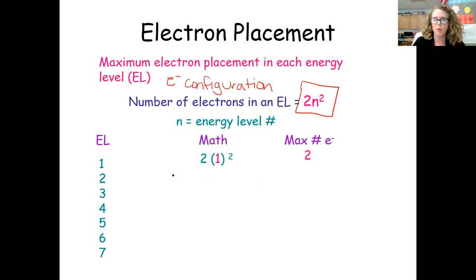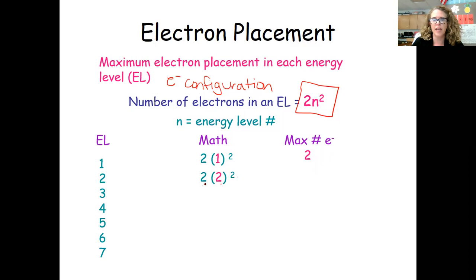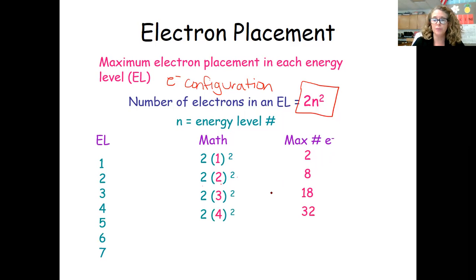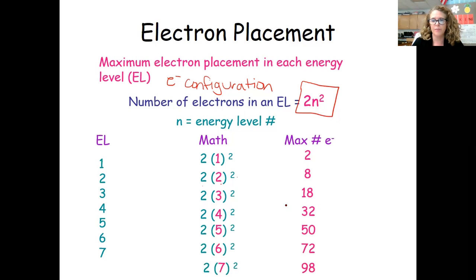Using the formula 2n²: for energy level one, 1² = 1 × 2 = 2, so the first level holds a maximum of two electrons. No element on the periodic table has a number larger than two as its first number in the electron configuration. For level two: 2² = 4 × 2 = 8. For level three: 18. For level four: 32. No element on the periodic table exceeds these values in their respective levels. Make sure you know 2, 8, 18, and 32 — those are the ones most likely to show up.